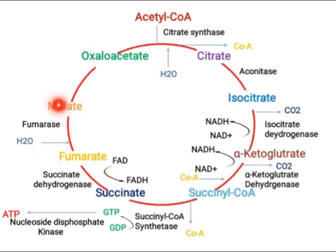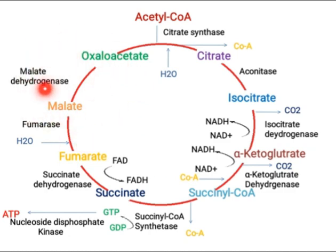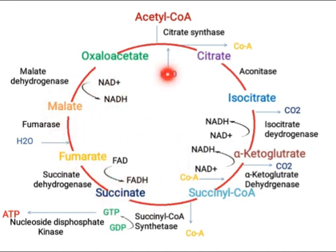Malate again converts into oxaloacetate, and the enzyme involved is malate dehydrogenase enzyme. This dehydrogenase enzyme again removes hydrogen from malate, NAD⁺ picks it up and converts to NADH. So succinyl-CoA, succinate, fumarate, malate, and finally oxaloacetate are all 4-carbon containing compounds. In this way, the Krebs cycle is complete.